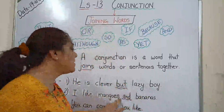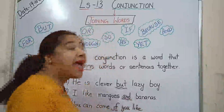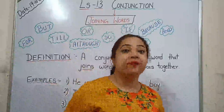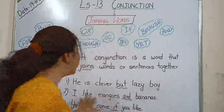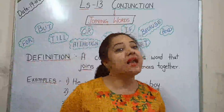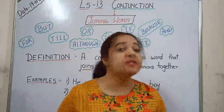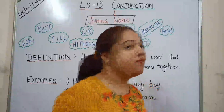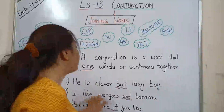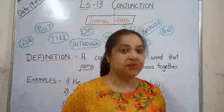Second example: I like mangoes and bananas. Here I like two things at a time. So why write the longer sentence? We will shorten it by using a conjunction. We have used 'and' for similar things. I like mangoes and bananas. Got it?